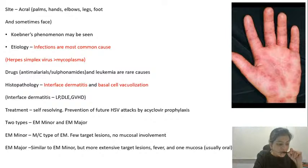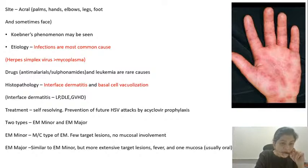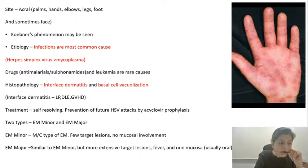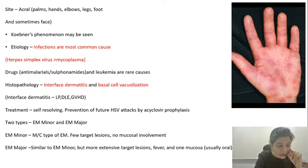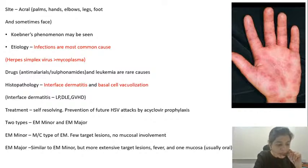There is something called a pseudo-Koebner phenomenon. Pseudo-Koebner phenomenon occurs in conditions which are infectious. What happens is because you scratch the lesion, the molluscum virus — that is molluscum contagiosum virus, a pox virus — gets auto-inoculated at the sites of scratching. That is called a pseudo-Koebner phenomenon. Pseudo-Koebner phenomenon is seen in molluscum as well as in warts due to auto-inoculation.